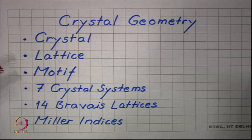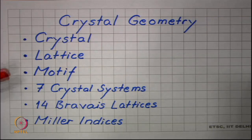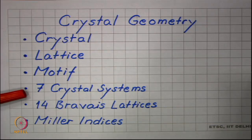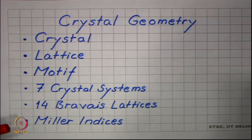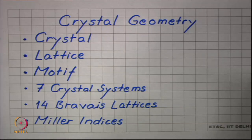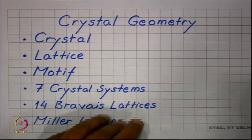Afterwards, we will focus mainly on lattice and see how the lattices can be classified into 7 crystal systems and 14 Bravais lattices. And we will end this section with a discussion of Miller indices of directions and planes.